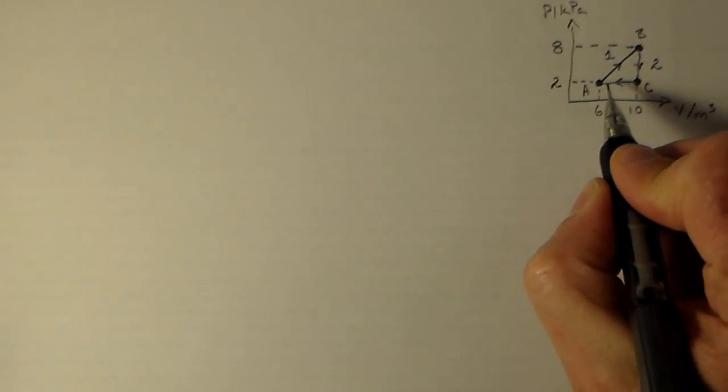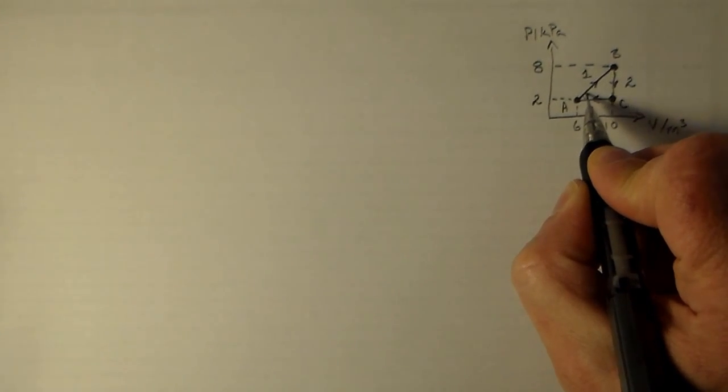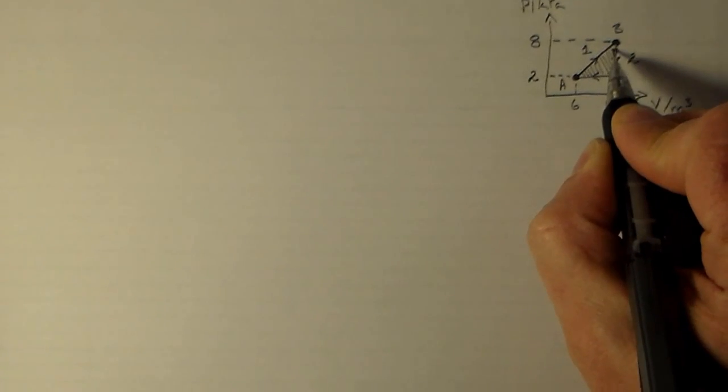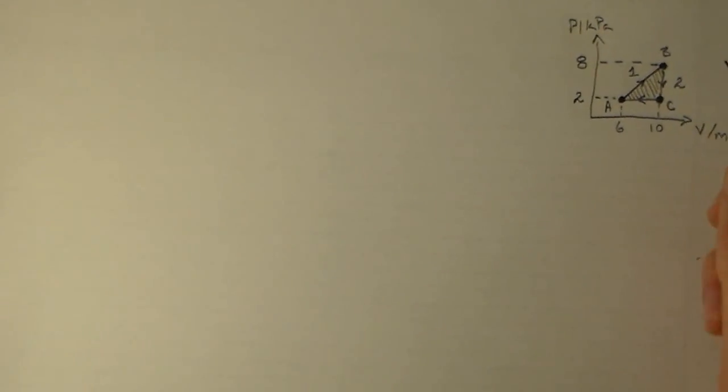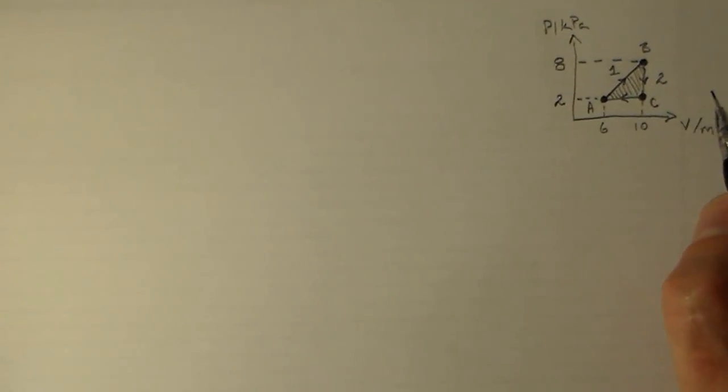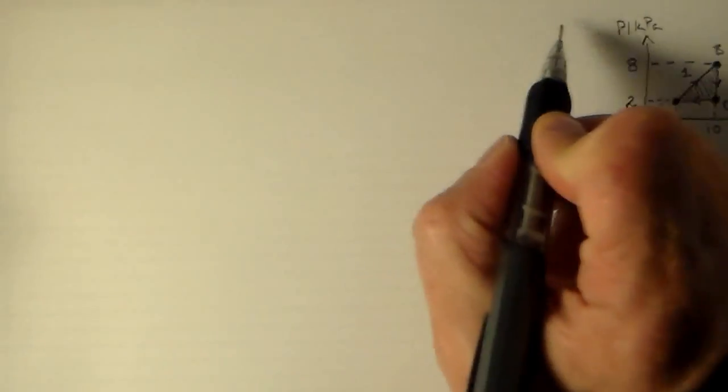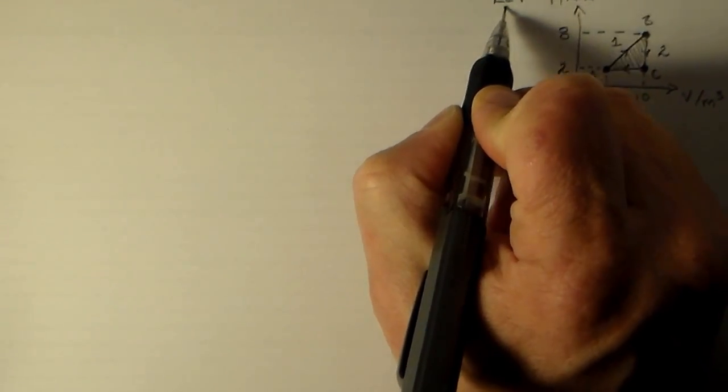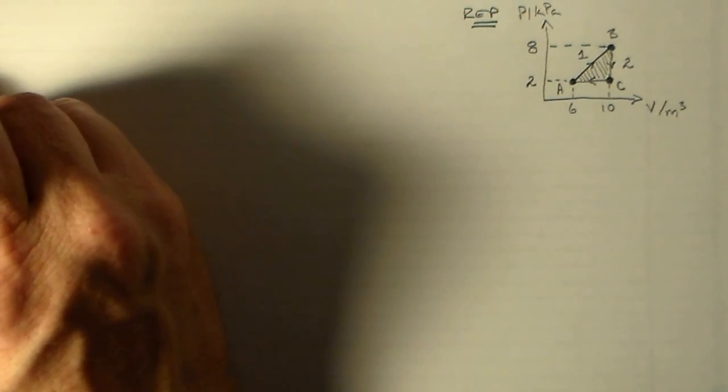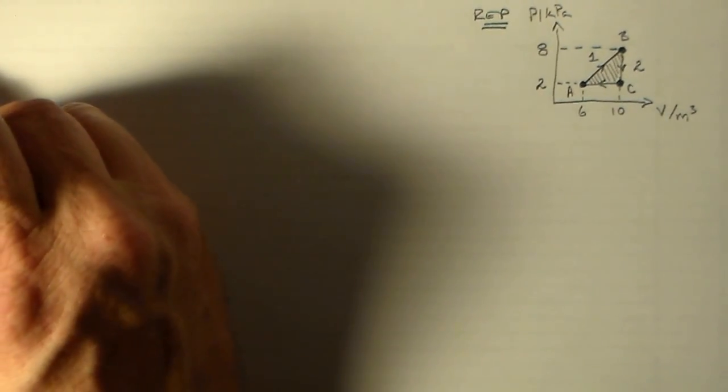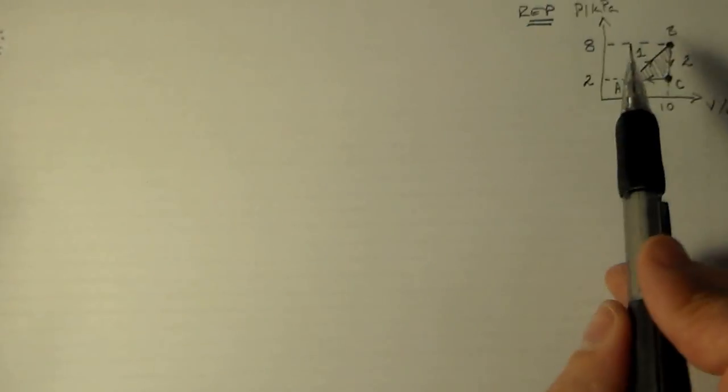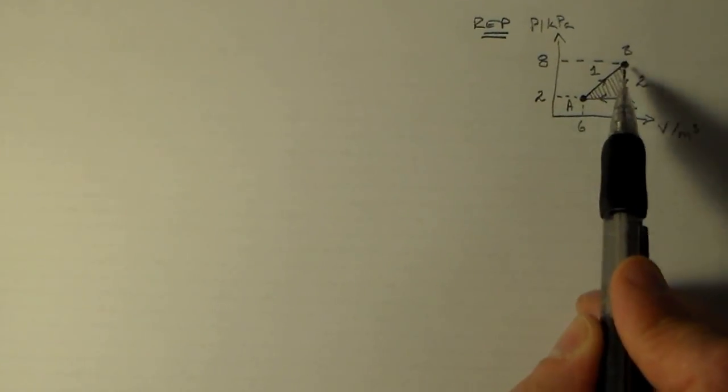What we'd like to do is look at the work or the change in the energy here. So how much work is this cycle doing? It's doing work because it's going counterclockwise. Now I'd like to identify some of the characteristics. We have three states.